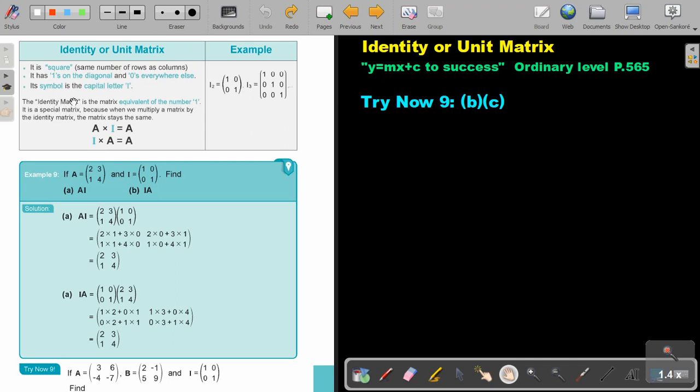The Identity Matrix is the matrix equivalent of the number 1. It is a special matrix because when we multiply a matrix by the Identity Matrix, the matrix stays the same. Can you remember, if you multiply, say, 5 by 1, it stays 5.